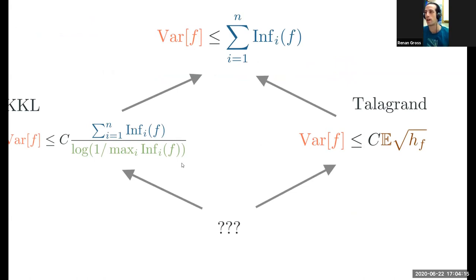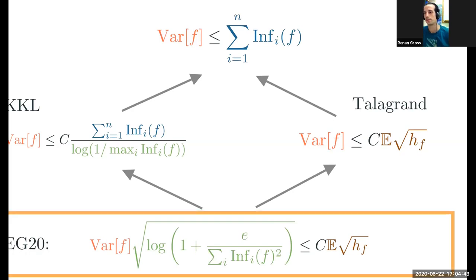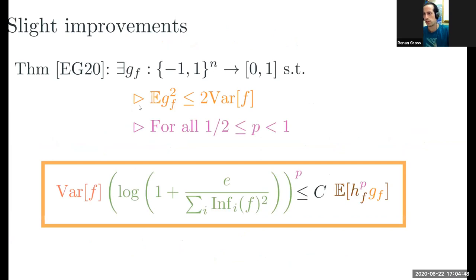A good question is whether there is an inequality stronger than both KKL and Talagrand — something underlying. The answer is sort of yes. This was conjectured by Talagrand about 25–30 years ago: that the variance times the square root of the log of one plus something related to the sum of squares of influences is smaller than the expected square root of sensitivity. In our paper we proved this, and in fact something slightly stronger.